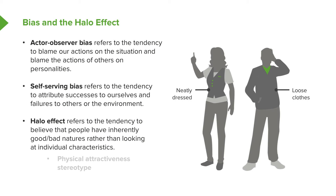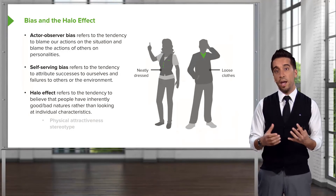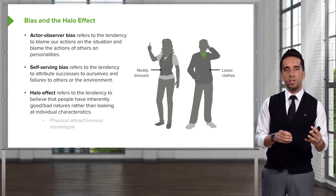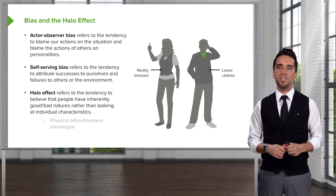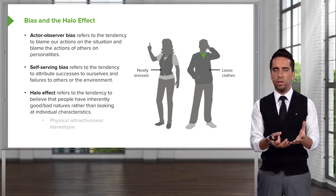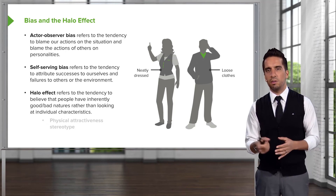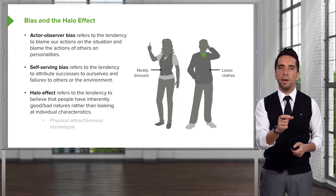The halo effect refers to the tendency to believe that people have inherently good or bad natures rather than looking at individual characteristics. You take one characteristic and make a generalization about an individual. For example, you go to your local coffee shop and the clerk is so nice to you. You say, 'That Rita, she's so nice,' and then you start making extrapolations — 'She's probably an amazing mother.' But how can you make that leap? Giving you an extra cookie doesn't necessarily mean she's a great person overall, yet you're making that leap based on that one characteristic.